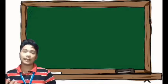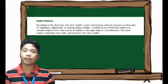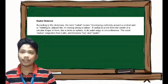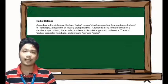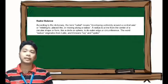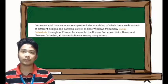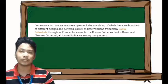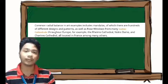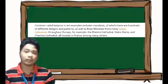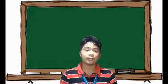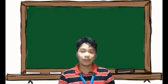The last type of balance is radial balance. The term radial means developing uniformly around a certain axis, or relating to a place like or moving along a radius — a line from the center of a circular shape to its outer edge or circumference. The word radius originates from Latin and means ray or spoke. Common radial balance in art examples include mandalas, of which there are hundreds of different designs and patterns, as well as rose windows from many Gothic cathedrals throughout Europe, for example Doreen's cathedral, Notre Dame, and Chartres cathedral, all located in France. That is all for the principle of art based on balance.